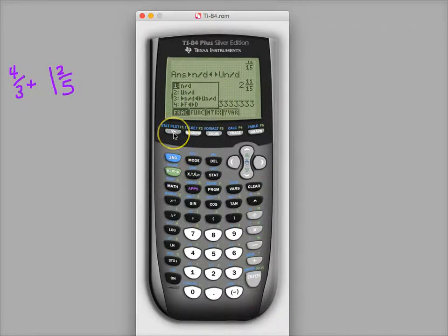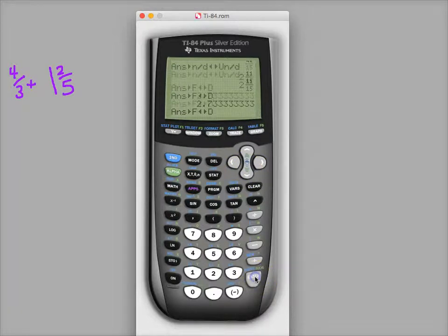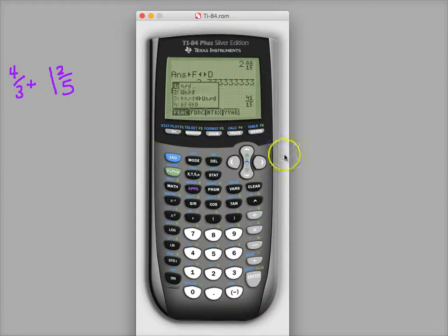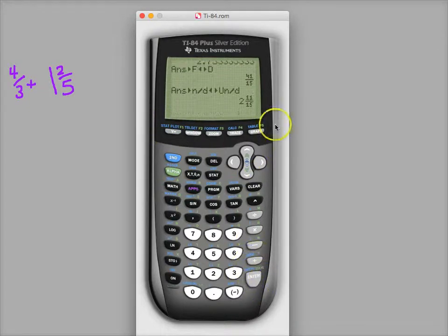Or if you want to use the alpha Y equals menu because you want to be like all the cool kids, do that and it'll convert it right back to 41 over 15. And then if you wanted to switch that into the mixed number thing, it'll go right back to this.